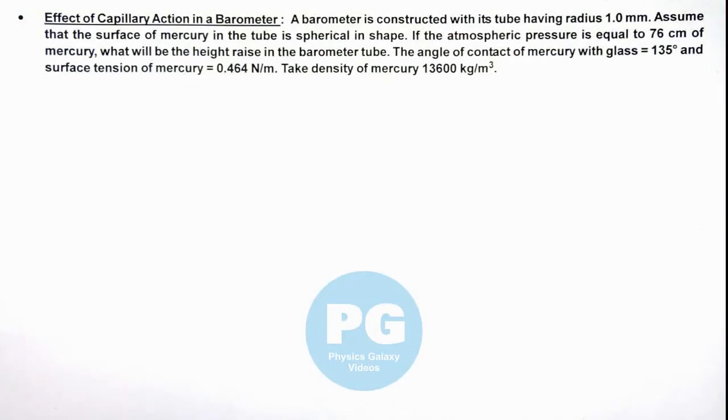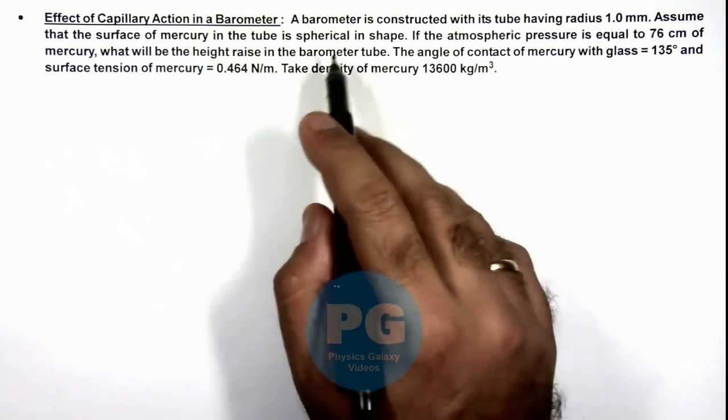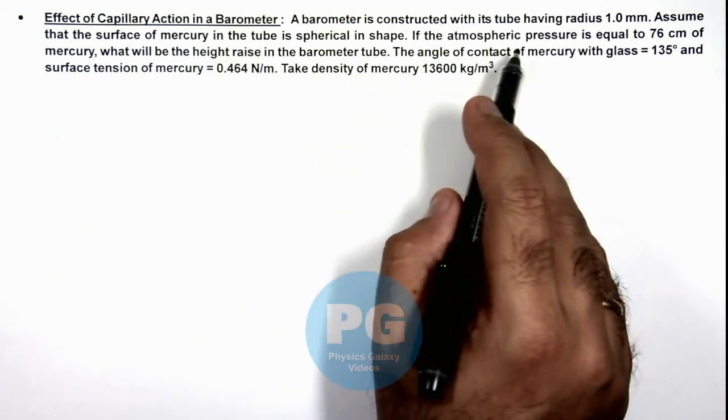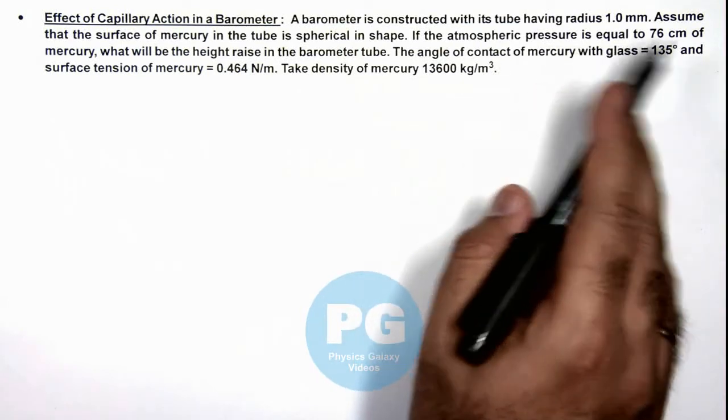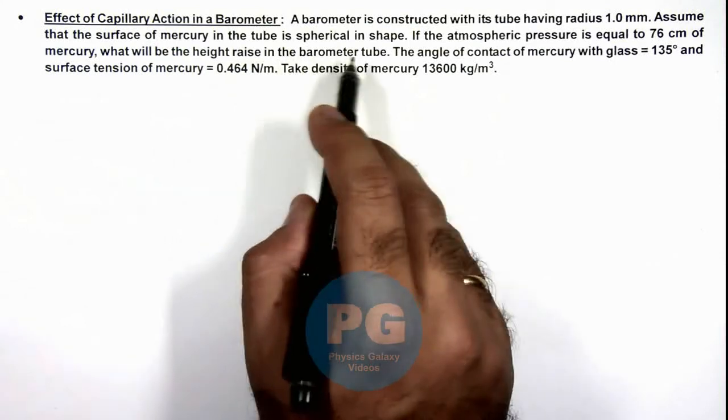In this illustration we'll discuss the effect of capillary action in a barometer. We are given that a barometer is constructed with its tube having radius 1 mm, and assume that the surface of mercury in the tube is spherical in shape.